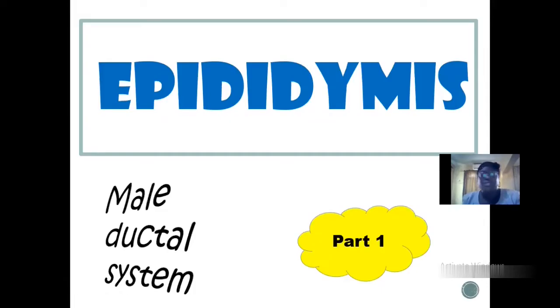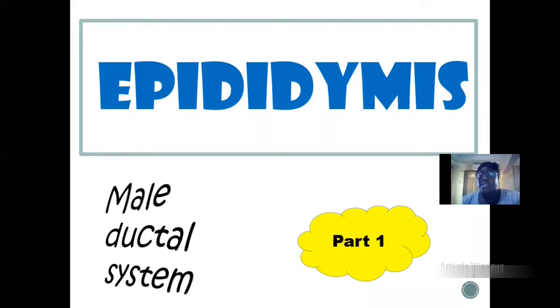Welcome. It's good to have you again. Let's look at the epididymis. The epididymis is the initial segment of the male ductile system. Let's look at the anatomy of the epididymis.